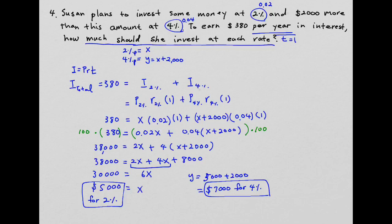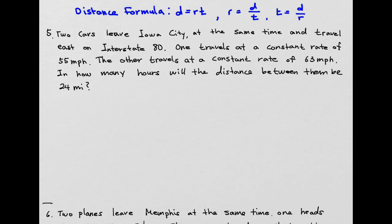So if we put $5,000 at 2% and $7,000 at 4%, at the end of the year we'll earn $380 in interest. The last topic in this section is the distance formula: D = RT — distance equals rate times time. We can also find rate as D ÷ T, or time as D ÷ R.